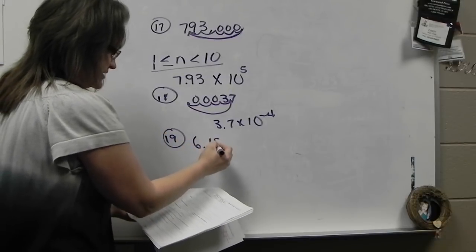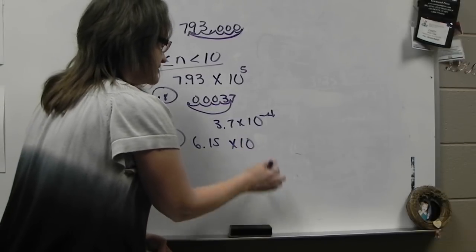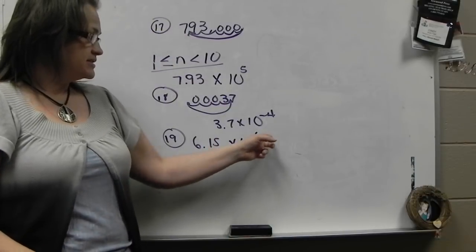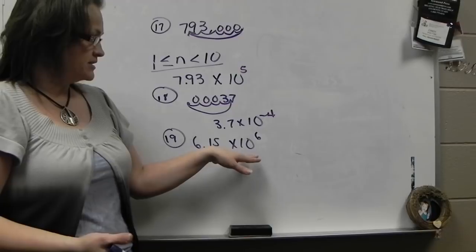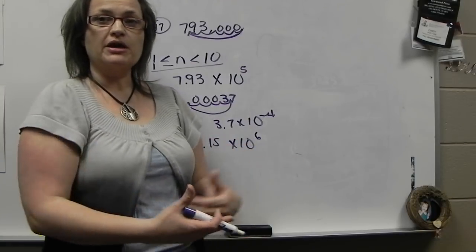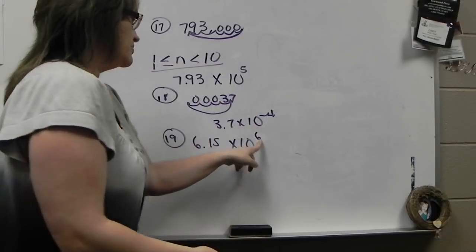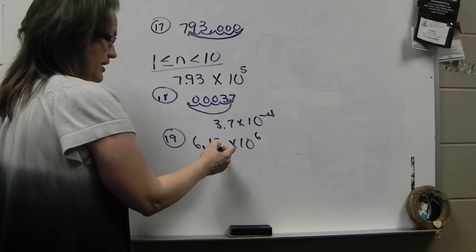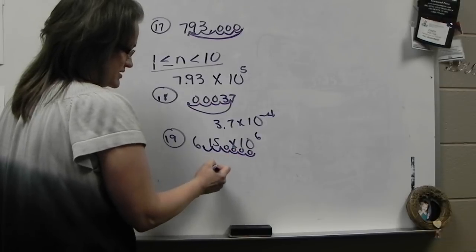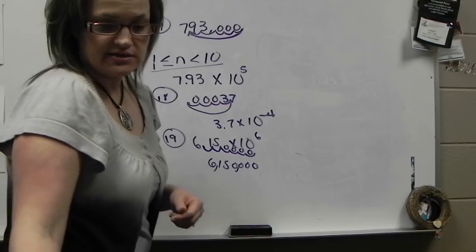Number 19, we go the other way and take this out of scientific notation. You can do this on your calculator and see that it's true. 10 to the sixth means a 1 with 6 zeros — it means a million. So 6.15 times a million, you know that's going to make it bigger — it's moving the decimal point back over to the right 6 places. So it makes it 6,150,000, with 4 zeros added.